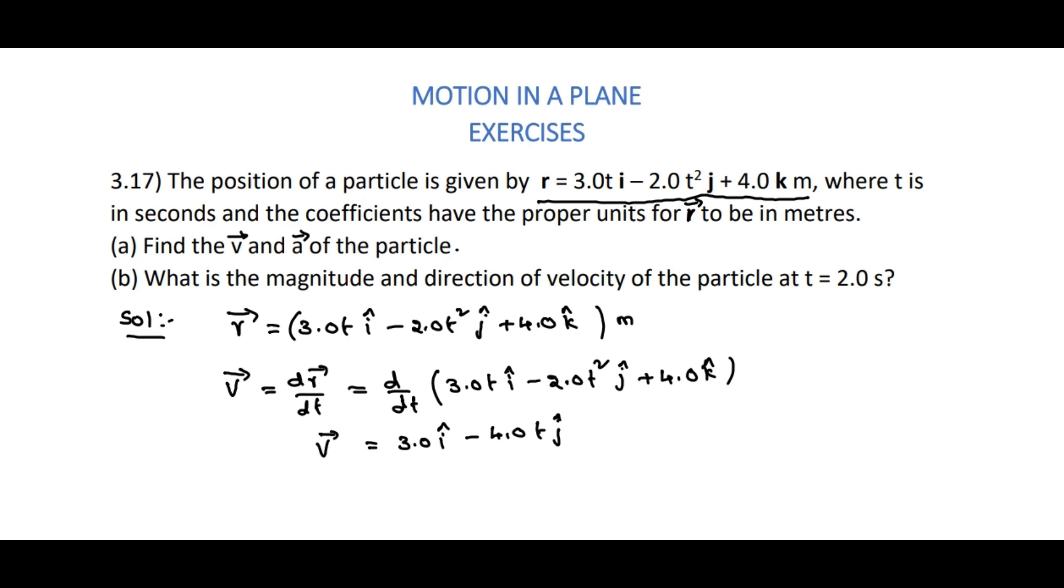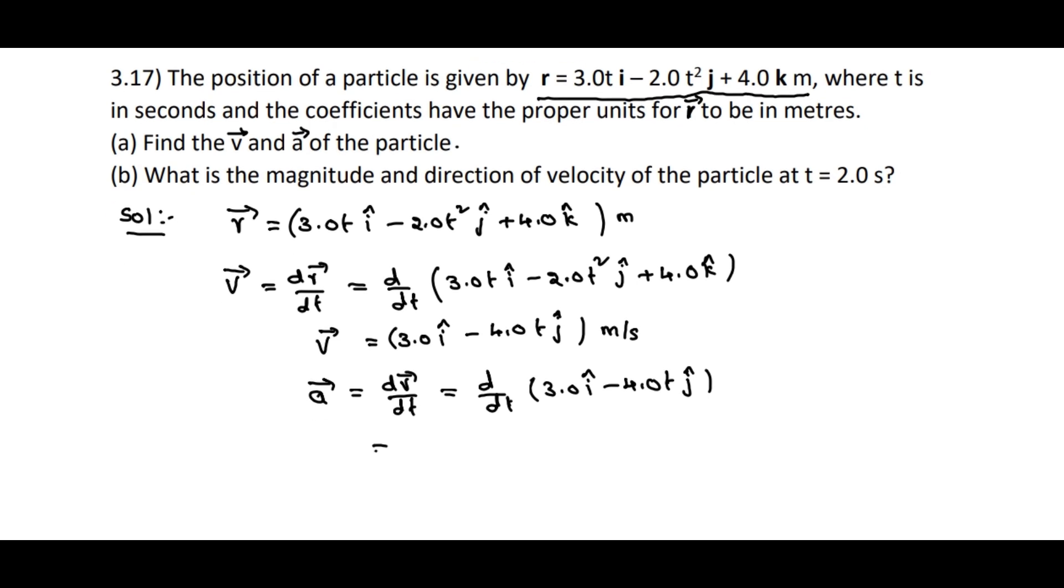That equals 3.0 i cap minus 4.0 T j cap. Here, if you observe, velocity v bar is also variable. While coming to acceleration, a bar equals dv bar by dt, which is d by dt of 3.0 i cap minus 4.0 T j cap. By differentiating this we will get minus 4.0 j cap, so acceleration is constant. It is along negative y axis.